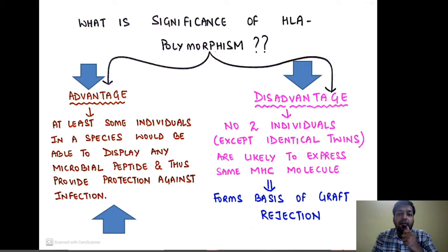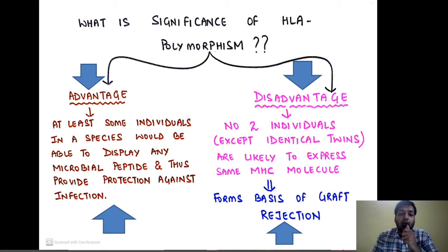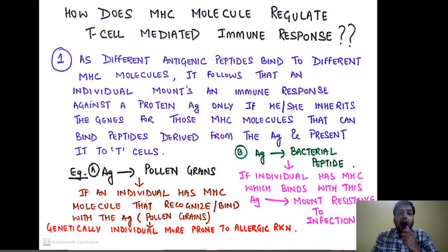The disadvantage is that no two individuals have the same HLA system — except identical twins. No two individuals are likely to express the same MHC molecule. Even between brothers and sisters who are not twins, they will not have the same HLA system. This is the basis for graft rejection — if my body's HLA is not the same as yours, my body will reject a graft taken from your body. This is the basic disadvantage of HLA polymorphism.